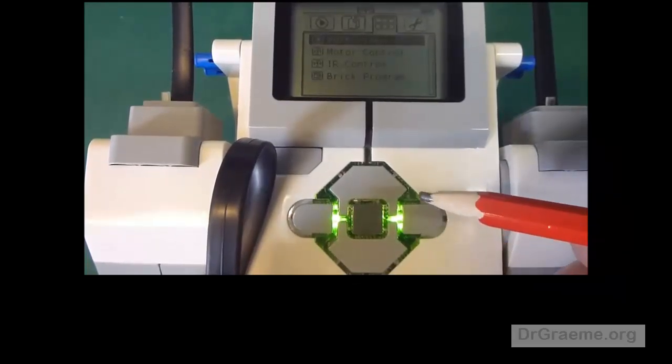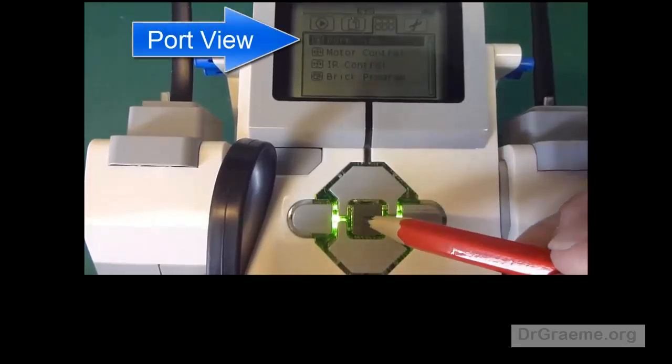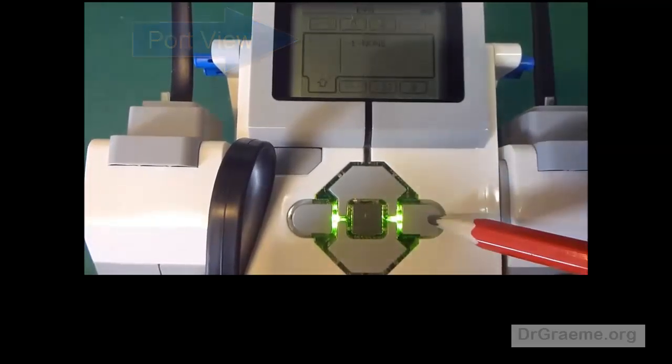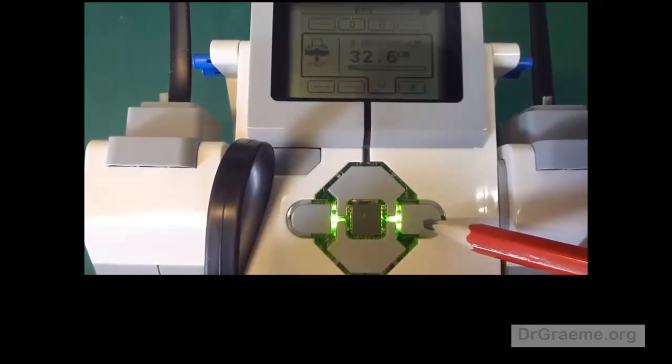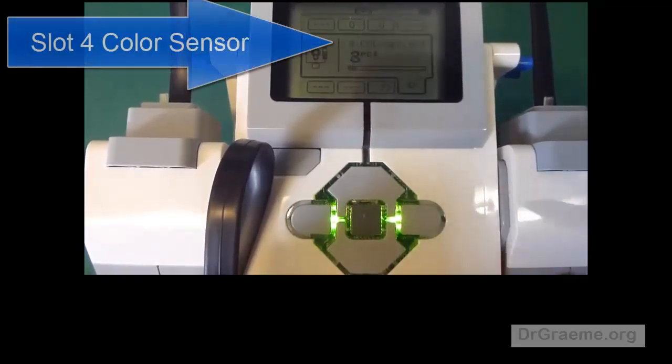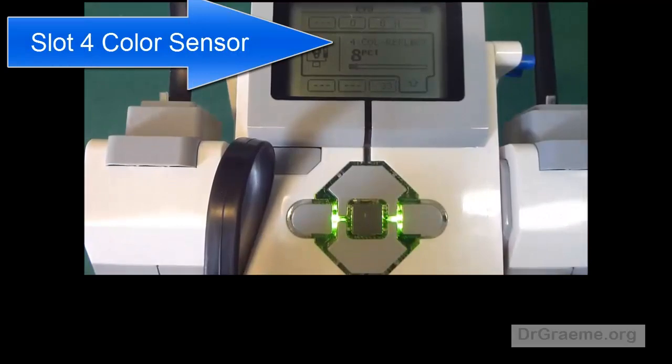Click this twice and you'll notice we say Port View. Click the middle and we see Slot 1, Slot 2, Slot 3 has the distance gap. Slot 4 is the reflected light.